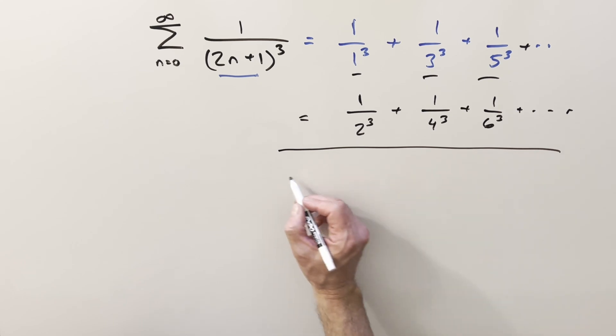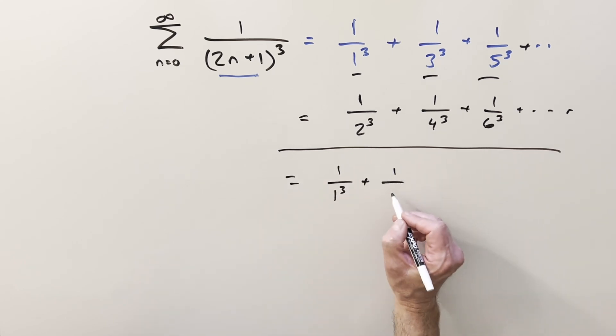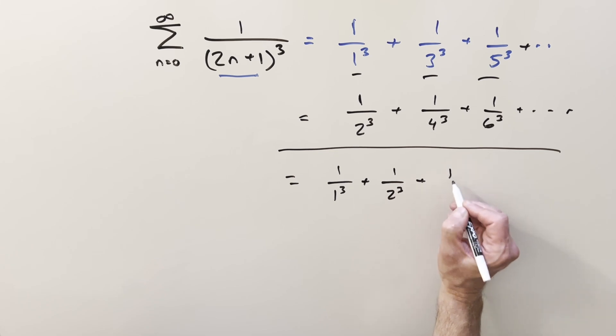If you add these together, you've got all the odd terms and all the even terms combined.